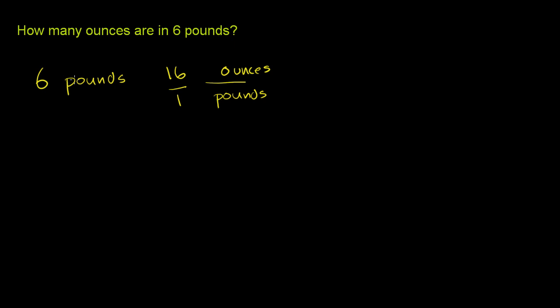So if we multiply these two expressions, this pounds will cancel with that pounds, and we'll just be left with the unit of ounces, which is what we want, and we just multiply 6 times 16.